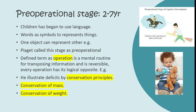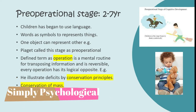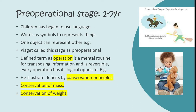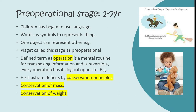Although three and four-year-olds can think in symbolic terms, their words and images are not yet organized or logical. Piaget called this the pre-operational stage, spanning from two to seven years, because a child does not comprehend certain rules or operations. Piaget defined an operation as a mental routine for transforming information that is reversible — every operation has its logical opposite.